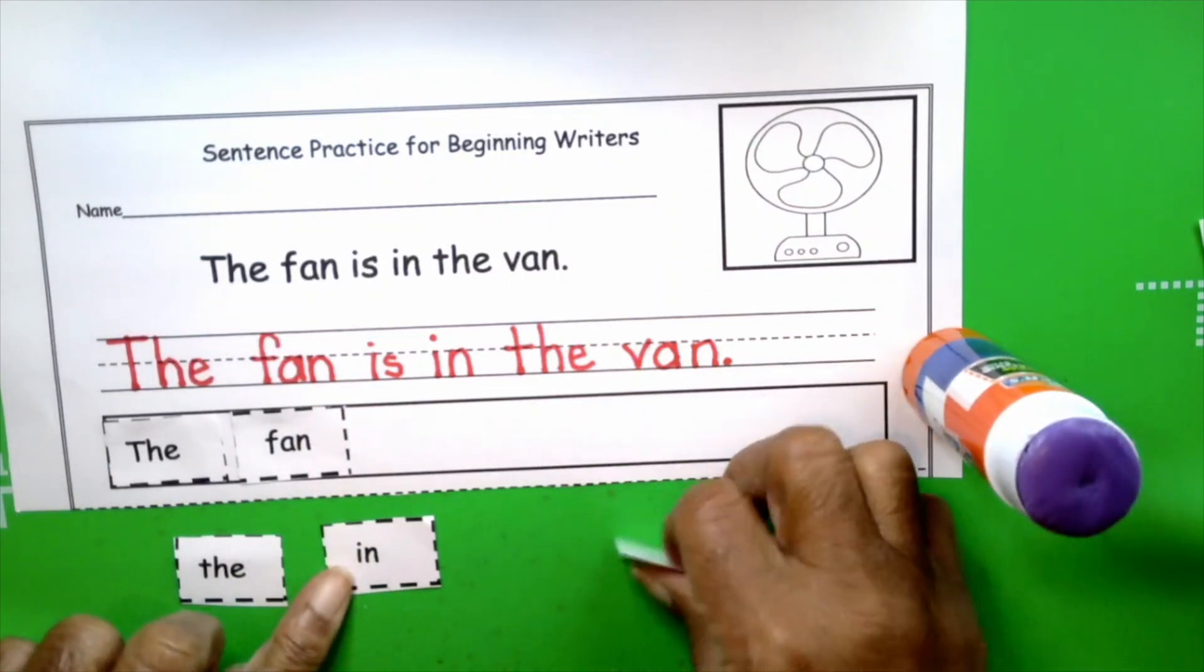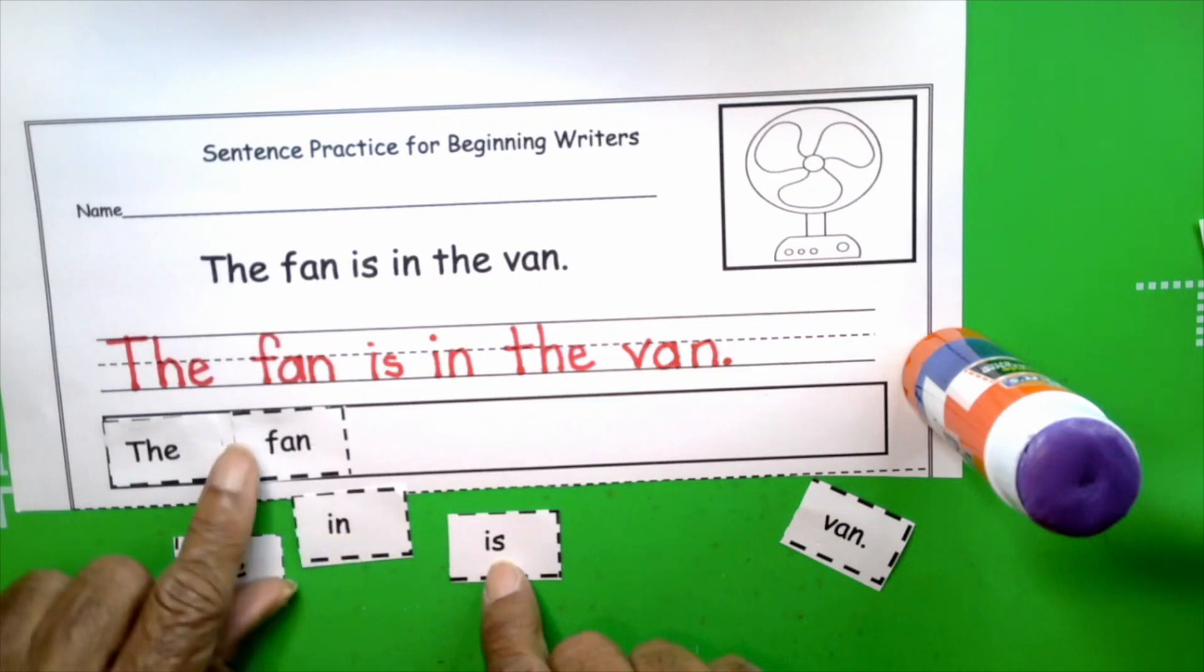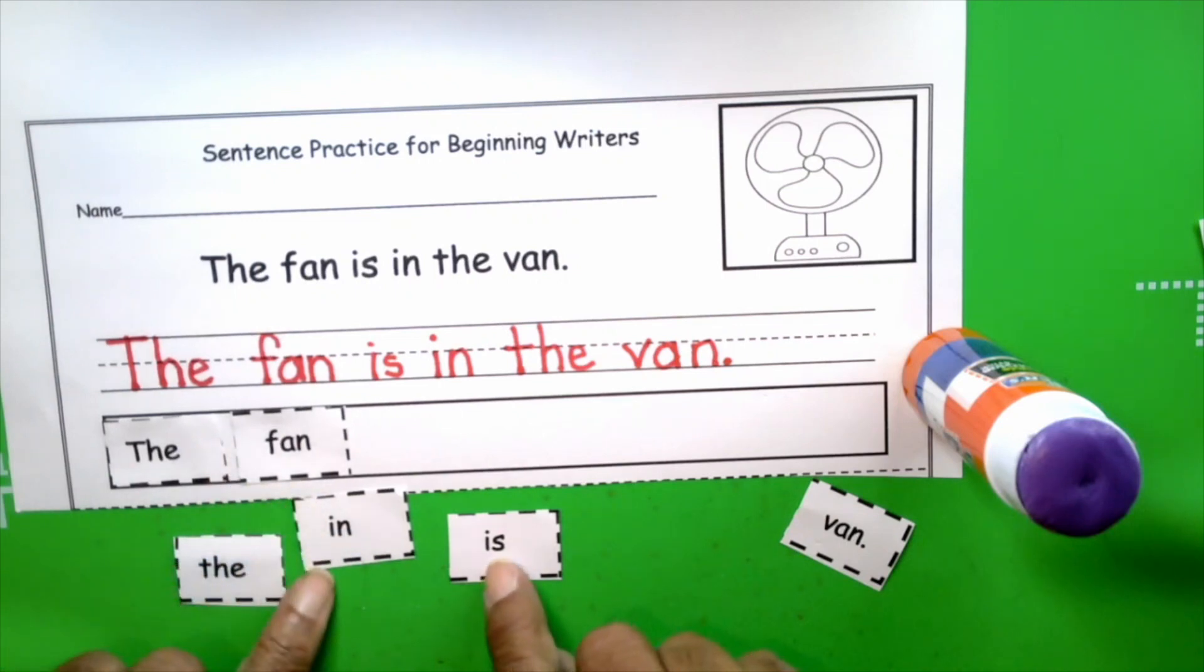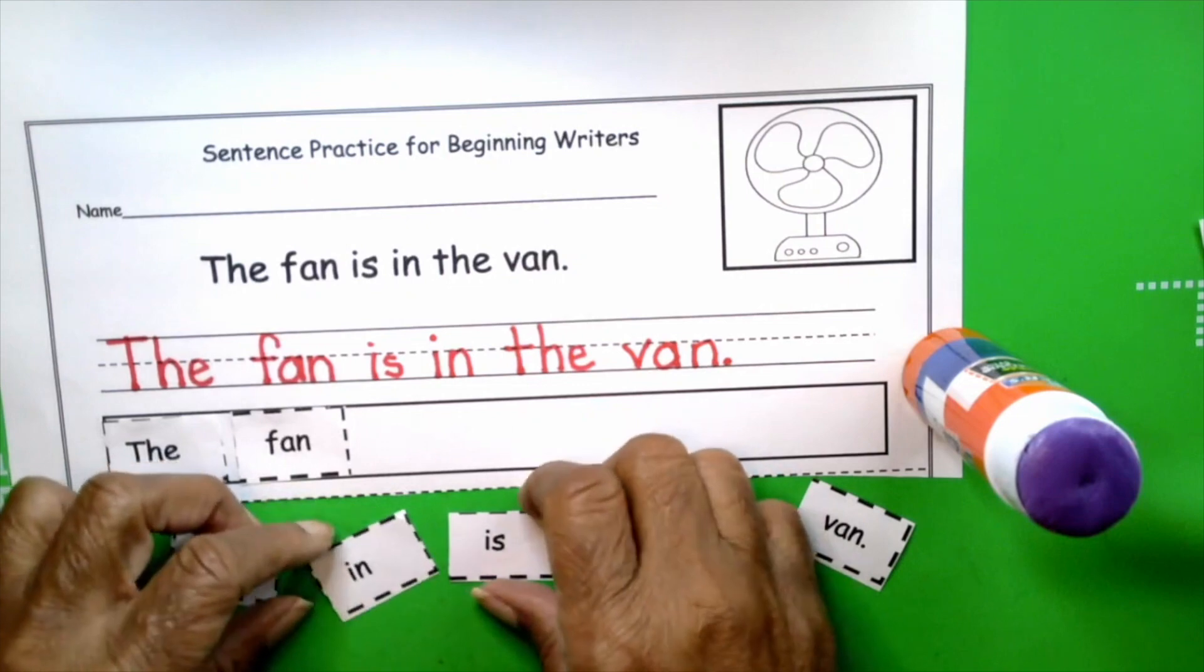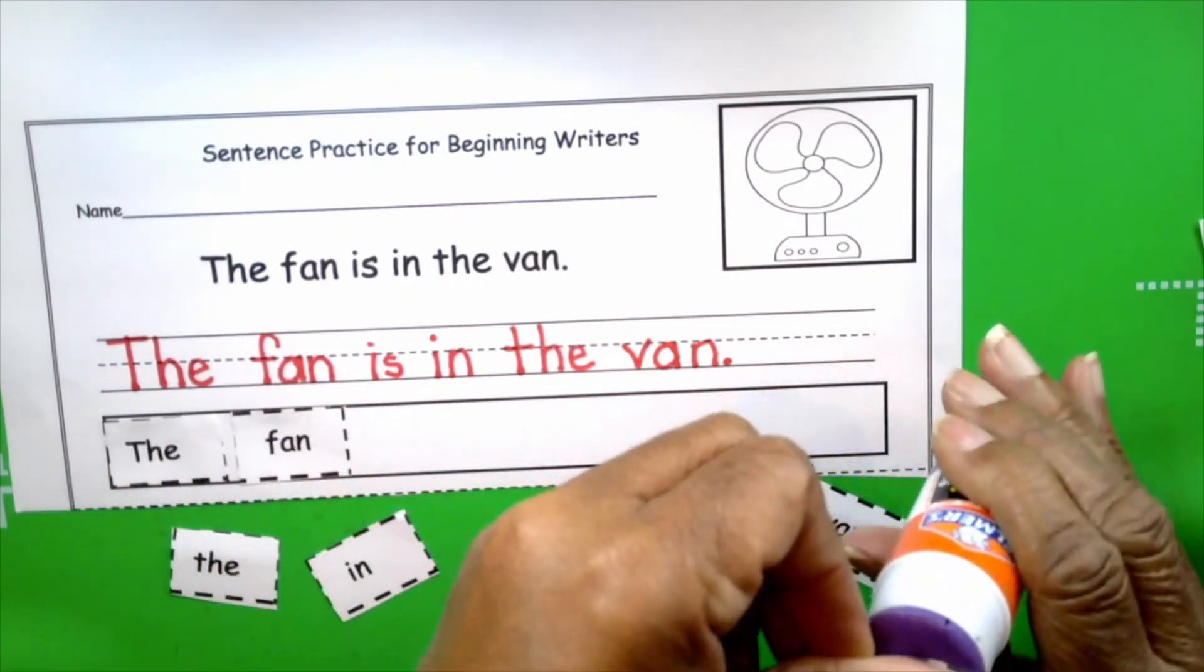The fan is. Take a look, boys and girls. We have two words that start with the i sound. How do we determine which one to use? Well, you say the word, is, let's say this one, i, n. Nope, that doesn't sound like it. This one sounds like is.